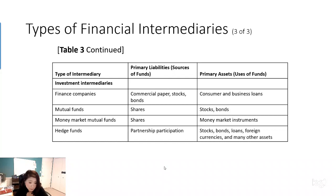The third type of financial intermediary is called investment intermediaries. The first one is finance companies. They acquire funds through commercial paper, stocks, and bonds that they issue, and they use that money to make commercial loans. For instance, if you buy a vehicle from VW, you might get a loan not from Wells Fargo but from VW Finance — because VW owns a finance company that uses money raised by selling commercial paper to offer you the loan.